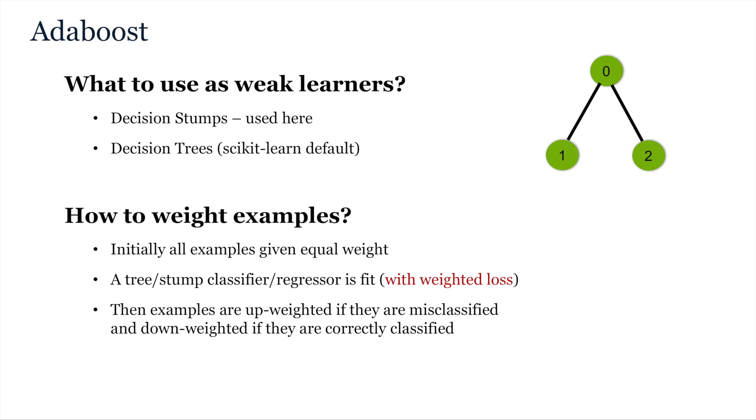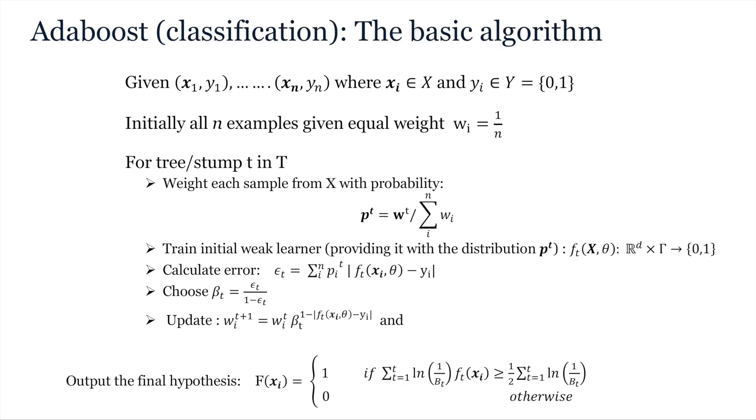So, all examples are initialized with equal weight. Then, as we saw in the toy example, at each iteration, a base learner, be it tree or stump, is fit to the data and the errors are estimated for each example. Subsequently, then, examples that are misclassified are up-weighted, relatively, where, in fact, what actually happens is that the correctly predicted examples are down-weighted. And then, at the next iteration, the estimation of the loss is weighted to take this into account.